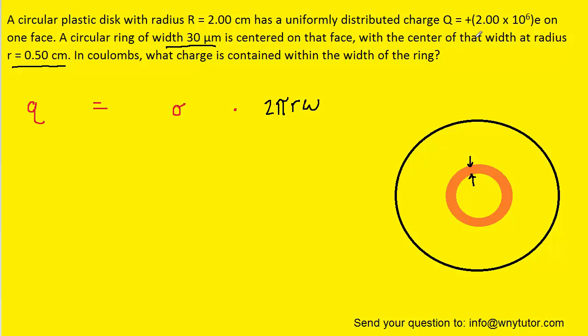We were told that the circular plastic disc has a total charge right here, and is a positive charge. So what we can imagine are a bunch of positive charges that are uniformly spread out across the circular plastic disc.